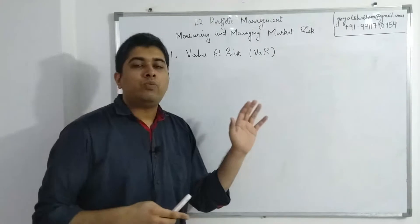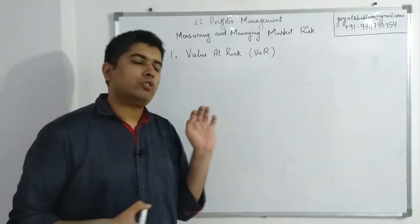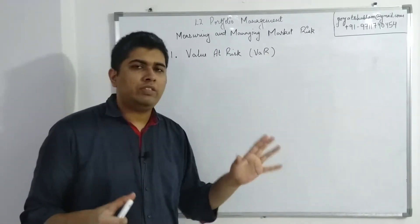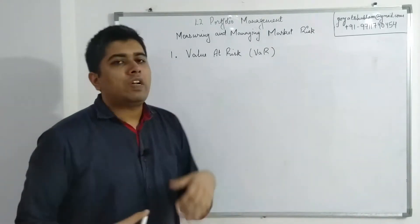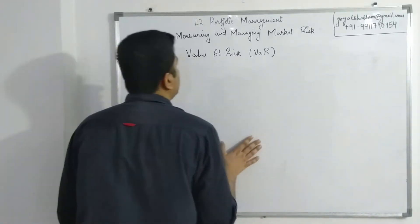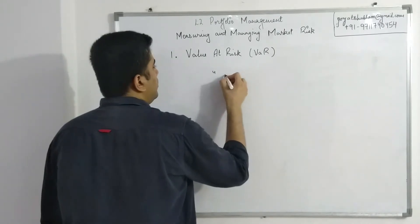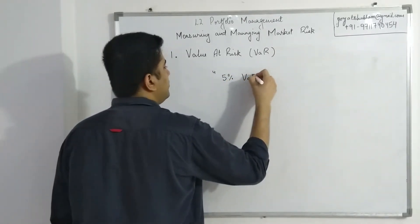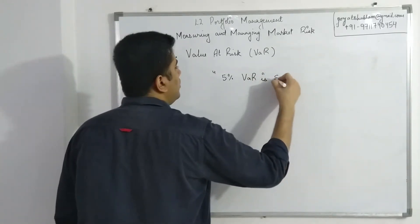Now, value at risk is one of the methods of estimating how much risk you have. So there are a lot of other methods, some of them we've already covered at Level 1, some you'll cover at Level 2 for individual securities. VAR is just another method. Now, in order to understand VAR, let's take a statement: five percent VAR is two million dollars.